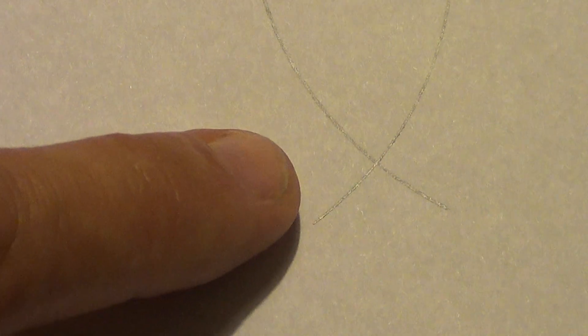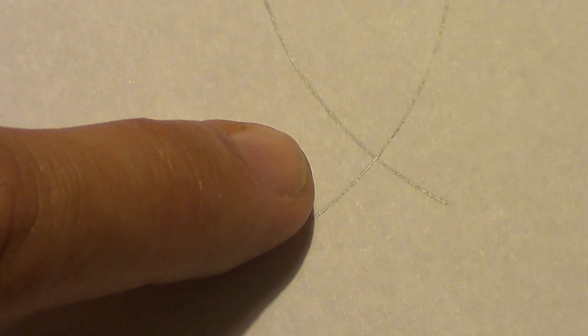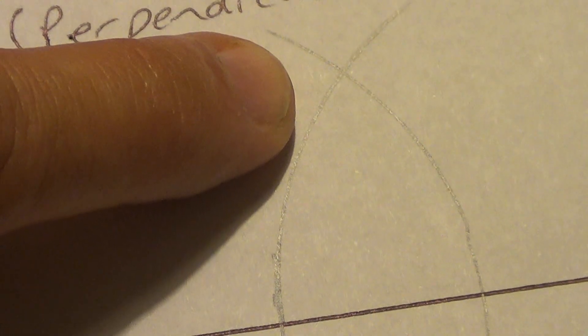Alright, now there's two things you need to see. See down here, I have a point of intersection where the two pencil lines, the two arcs, meet. And up here, I have another one. Those are important.